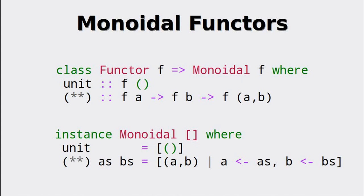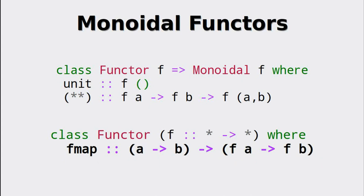The double star operator responsible for lifting our context can be constructed by doing the cross product on the list. Using zip, for example, wouldn't really be suitable since it could drop elements. Now that we have created the monoidal functor, let's compare it to the normal functor. We see some faint similarities to our old functor, especially the lifting done by fmap and the double star operator. The big difference is that the operator in the monoidal functor only treats objects that are in the same functorial context, which is different from fmap.